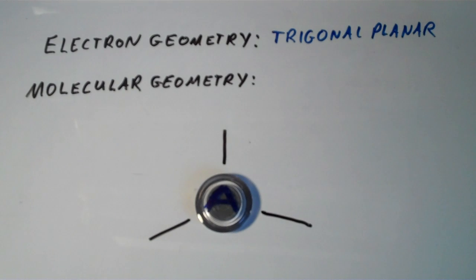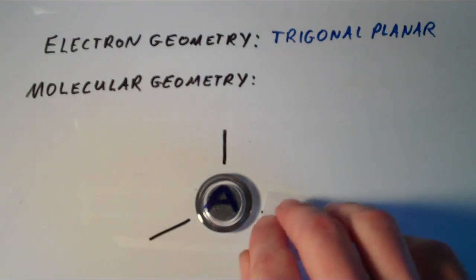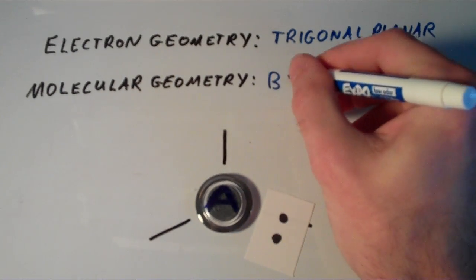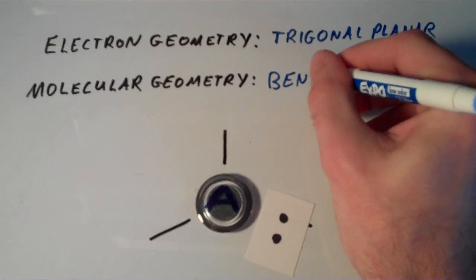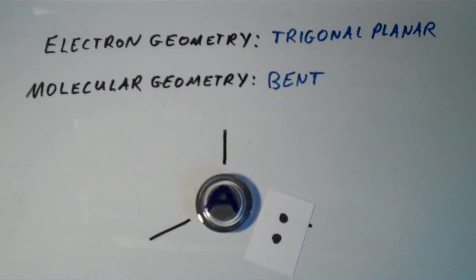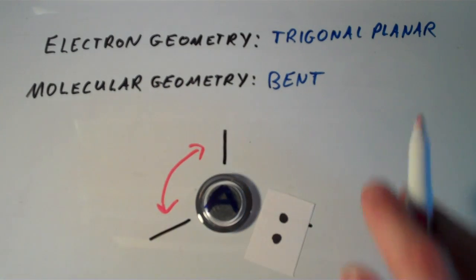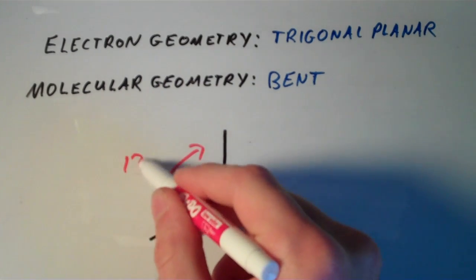However, if one of those electron groups happens to be a lone pair, that gives rise to a molecular geometry that we call bent. So the approximate angle between these two atoms then would still be that trigonal planar angle of 120 degrees.